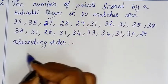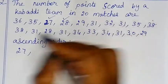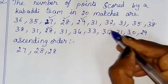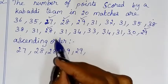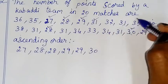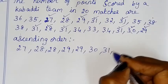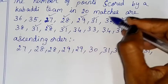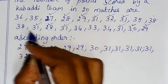The smallest number is 27, which repeats 1 time. 28 repeats 2 times. 29 repeats 2 times. Then we count further: some values repeat 3 times, and 31 repeats 5 times.